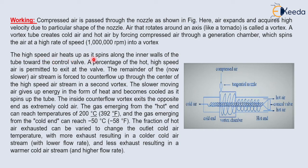The high speed air heats up as it spins along the inner wall of the tube towards the control wall, becoming very hot. A percentage of this hot, high speed air is permitted to exit at the control wall.